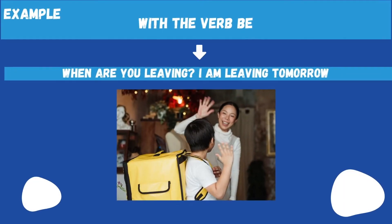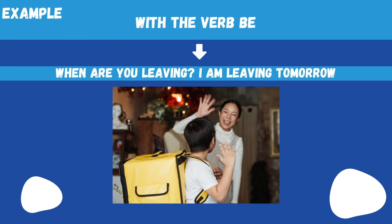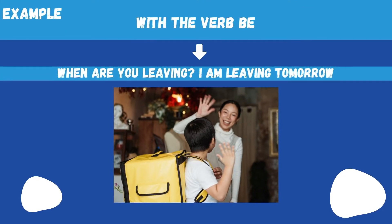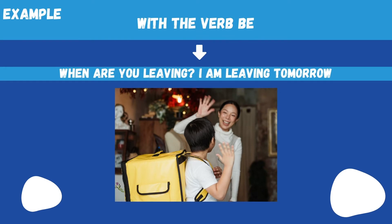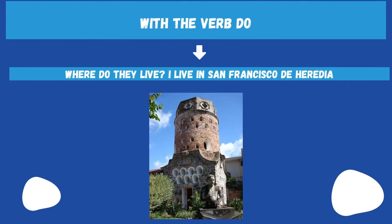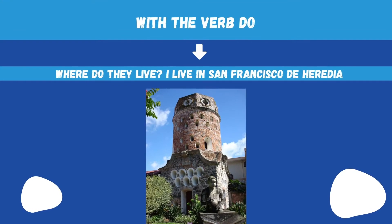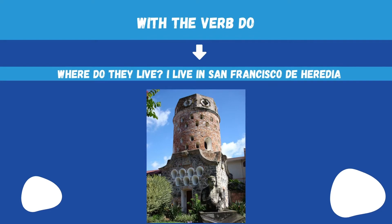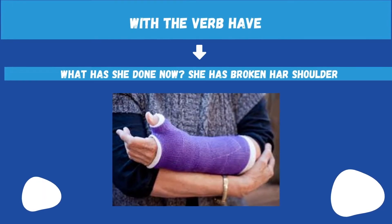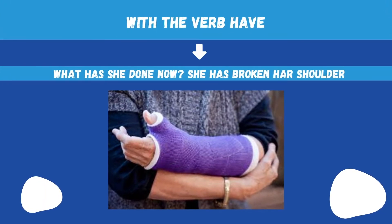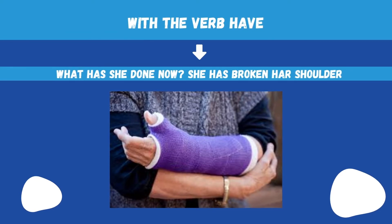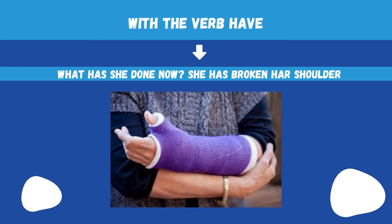Examples. With the verb be: 'When are you leaving?' — 'I am leaving tomorrow.' With the verb do: 'Where do you live?' — 'I live in San Francisco de Heredia.' With the verb have: 'What has she done now?' — 'She has broken her shoulder.'